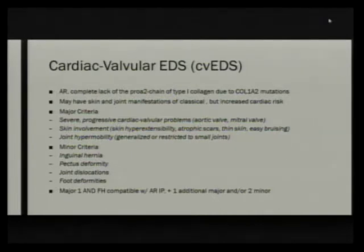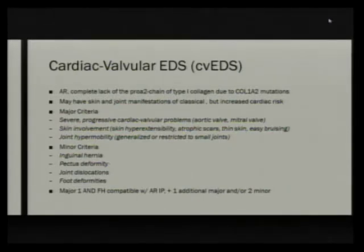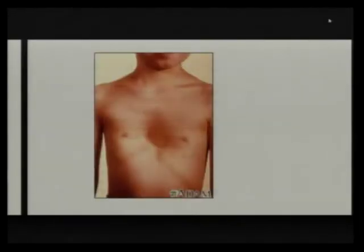Cardiac valvular is the next subtype, and obviously affects the heart more. Aortic dilatation can affect the aortic and mitral valves. They also have skin manifestations and often have pectus deformities.